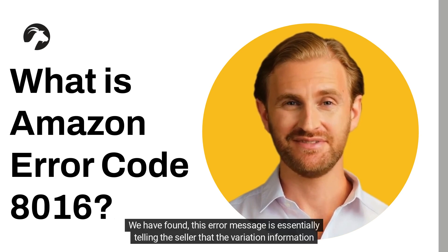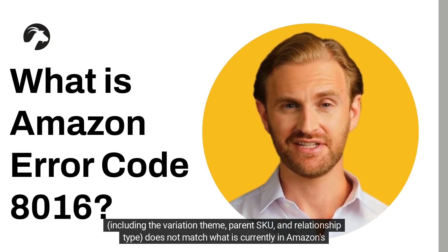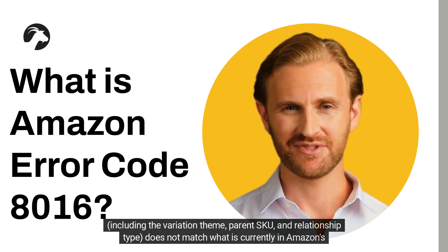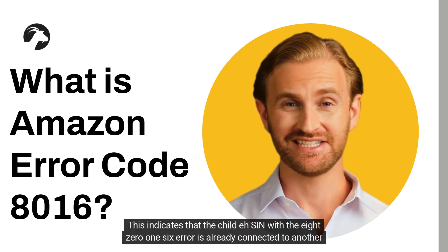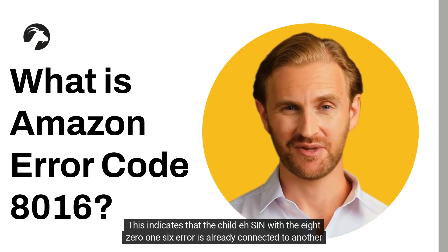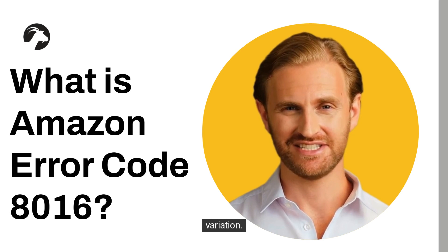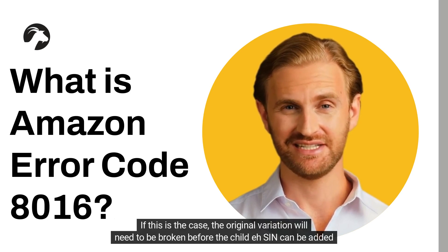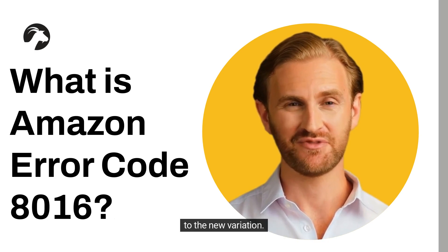We have found this error message is essentially telling the seller that the variation information — including the variation theme, parent SKU, and relationship type — does not match what is currently in Amazon's catalog. This indicates that the child ASIN with the 8016 error is already connected to another variation. If this is the case, the original variation will need to be broken before the child ASIN can be added to the new variation.